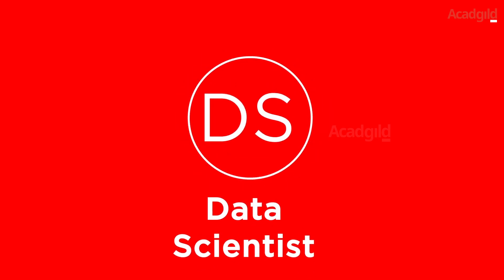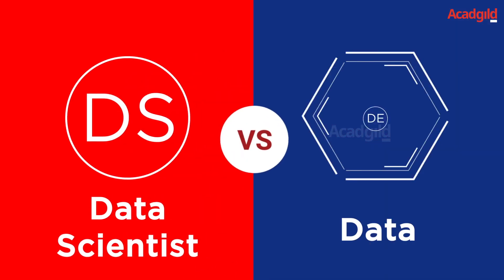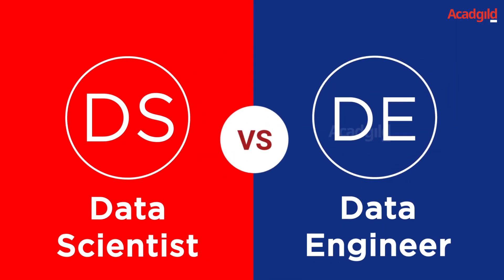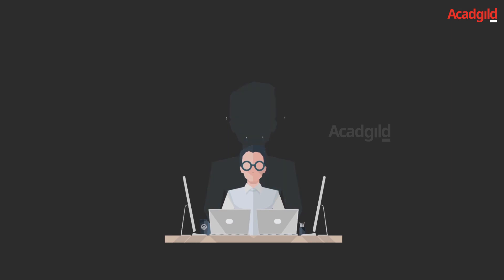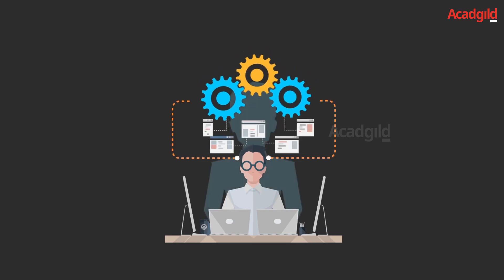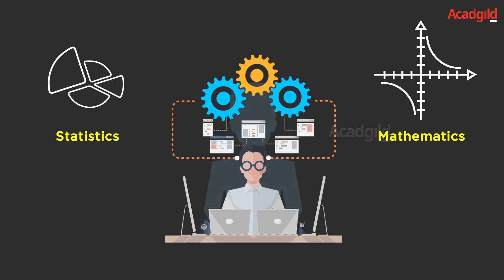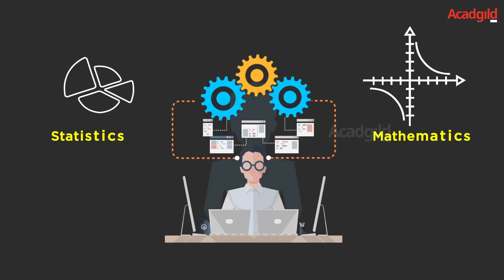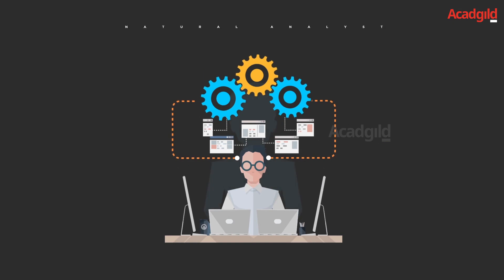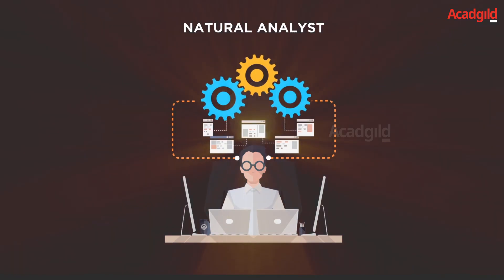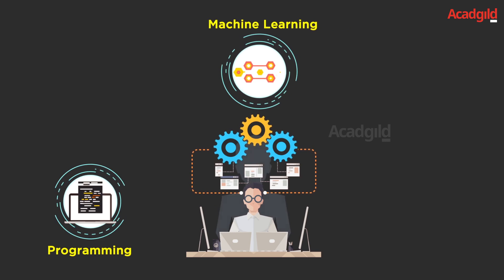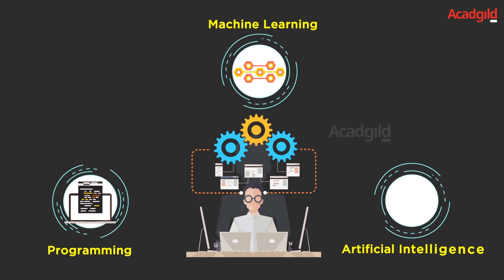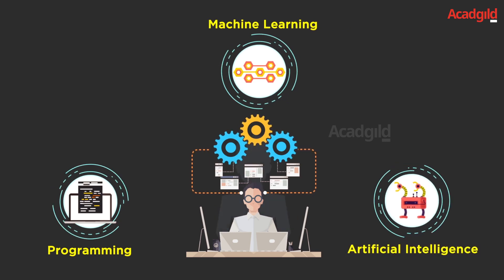What is the difference between a data scientist and a data engineer? A data scientist is someone who is generally good at mathematics and statistics. His proficiency in these subjects makes him a natural analyst. He knows programming and has a penchant for machine learning and artificial intelligence modeling.